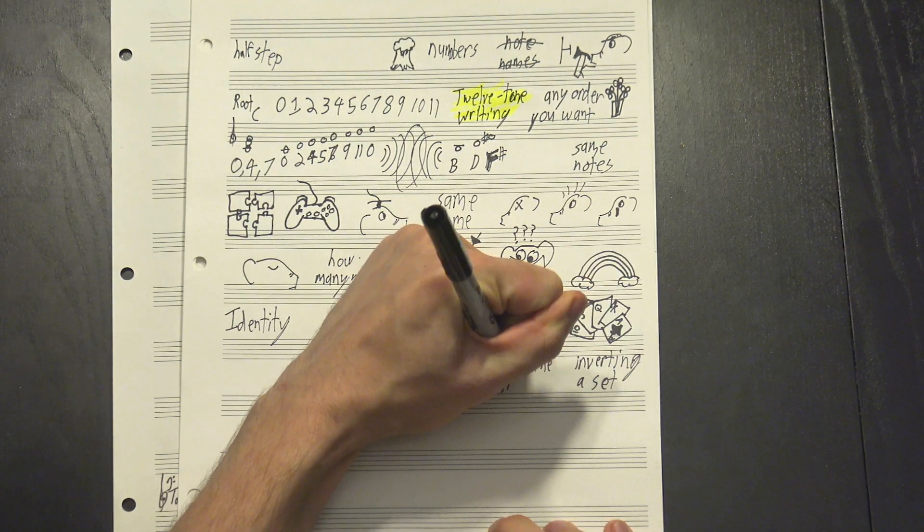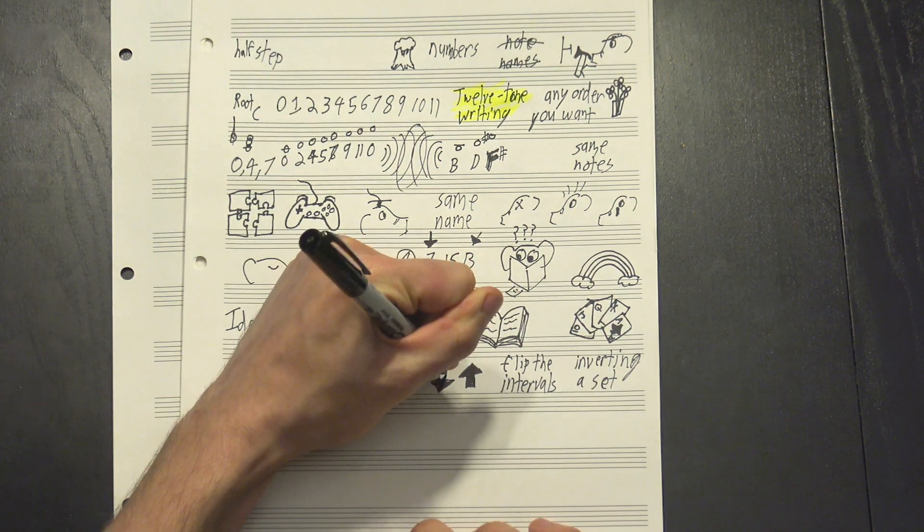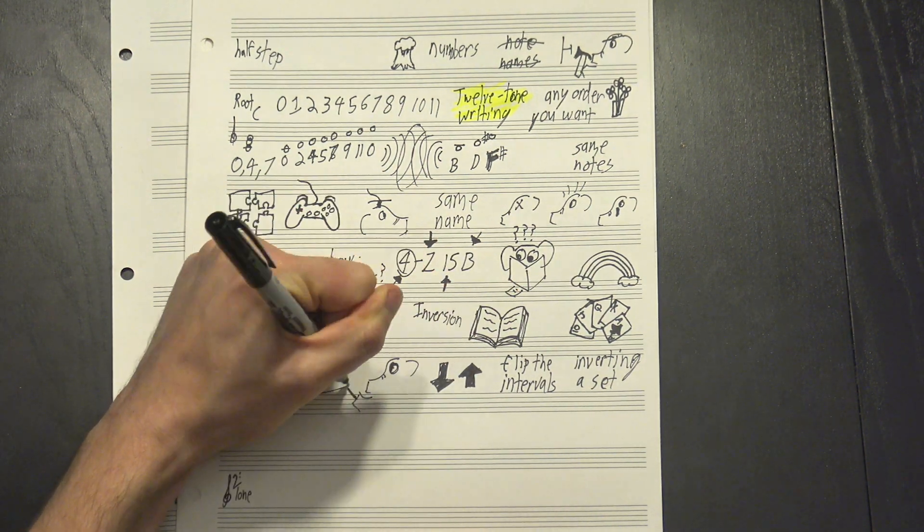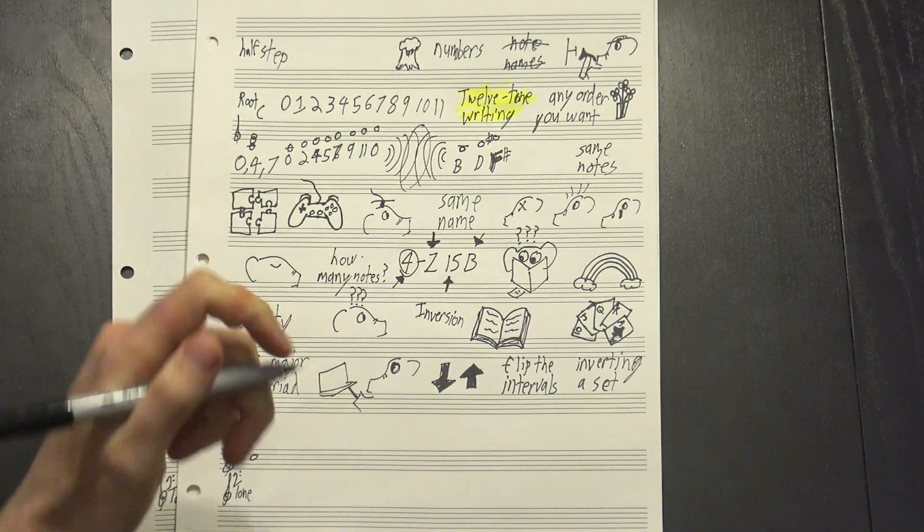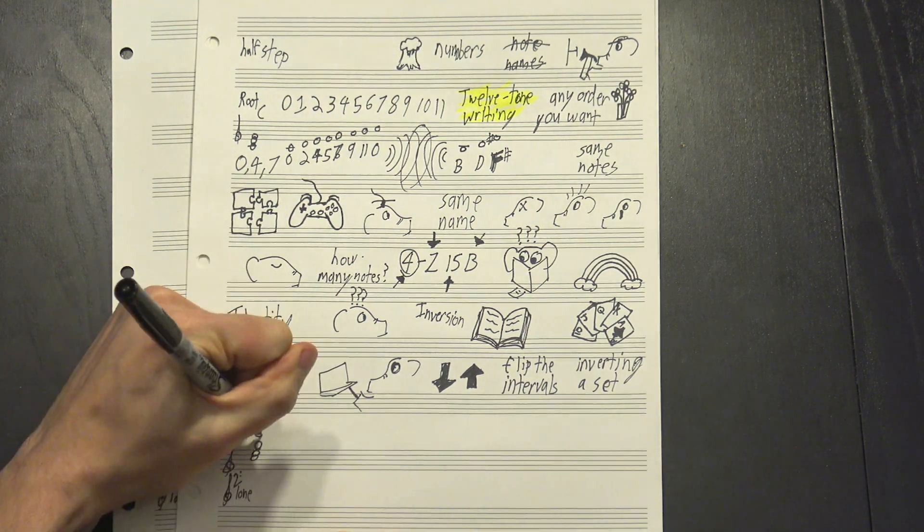Well, we talked about inversions back in our 12-tone writing video. Basically, inverting a set means that you flip all the intervals. Instead of going up, you go down. For example, as we mentioned before, the major triad is the set zero, four, seven, which means we have a root, a note four half-steps above it, and a note seven half-steps above it.